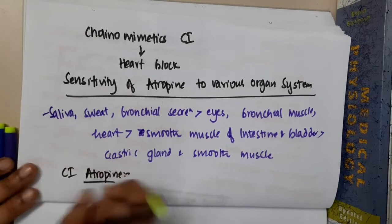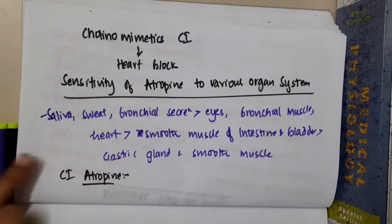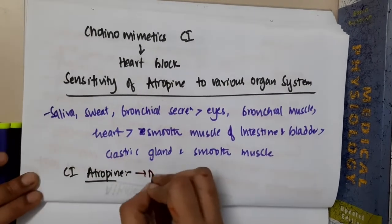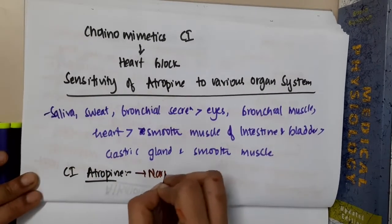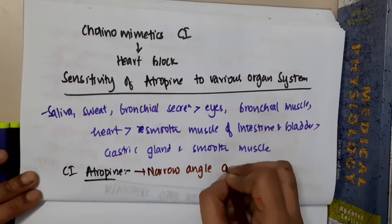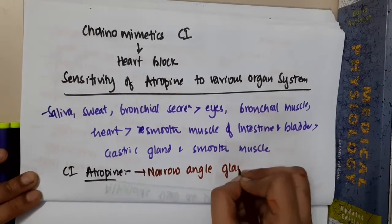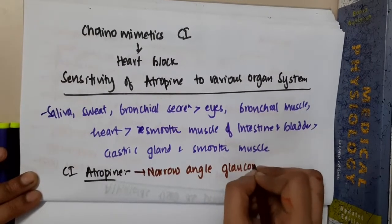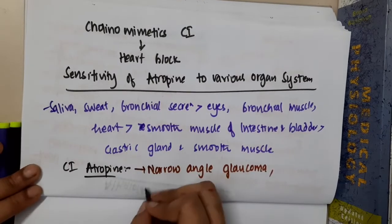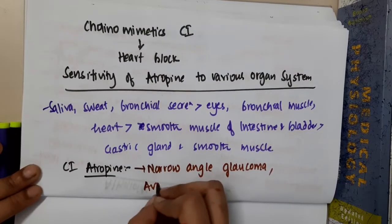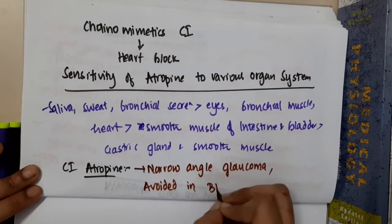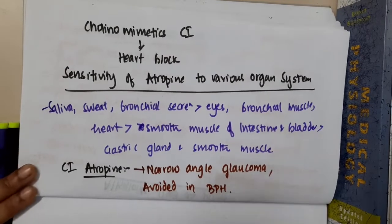The contraindications of atropine include glaucoma — especially narrow angle glaucoma, because it is a mid-reactive drug. It is also avoided in benign prostatic hypertrophy.